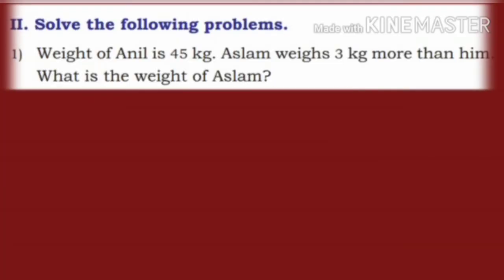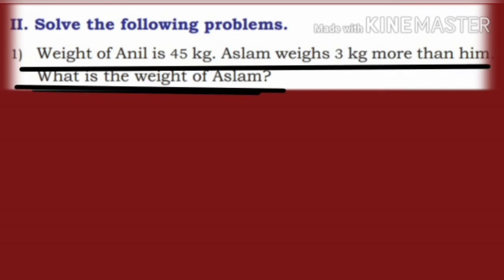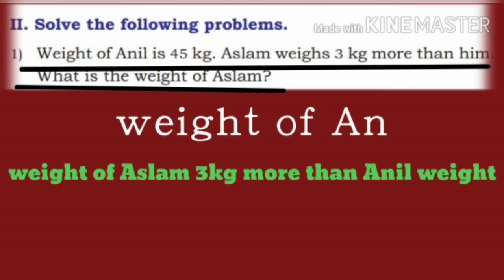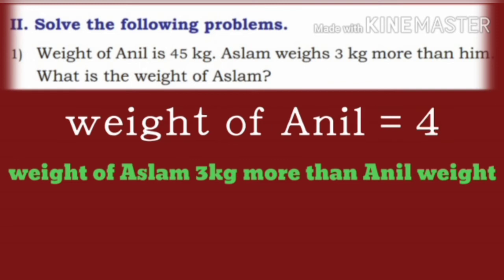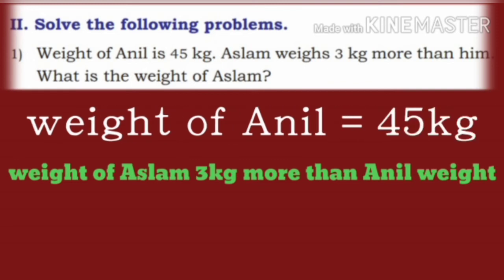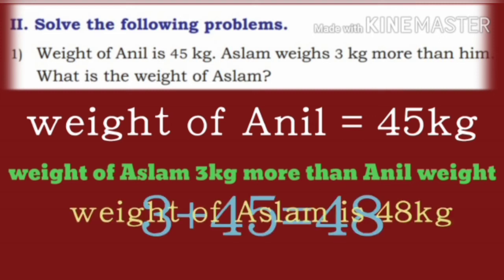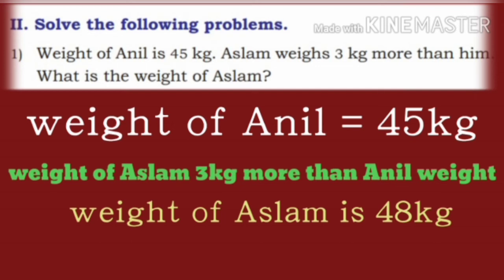Now let us solve the problems. First one: the weight of Anil is 45 kg. Aslam weighs 3 kg more than him. What is the weight of Aslam? Weight of Anil is 45 kg. Weight of Aslam is 3 kg more than that of Anil, so 3 plus 45 is 48 kg. Weight of Aslam is 48 kg.